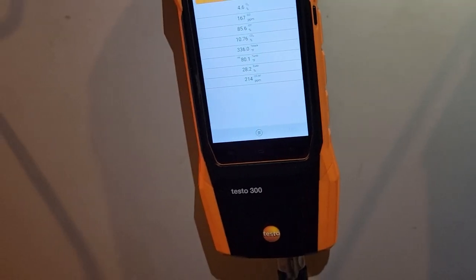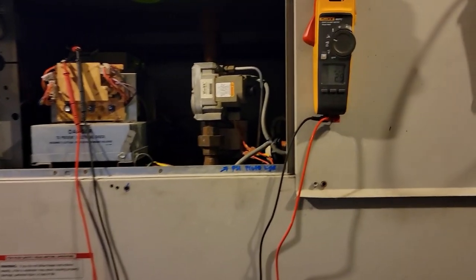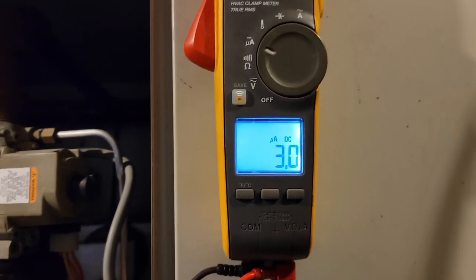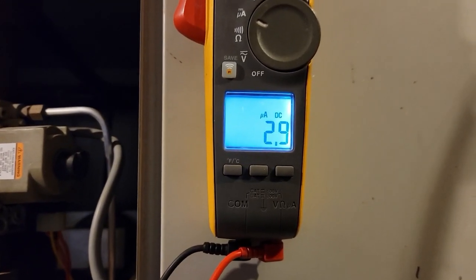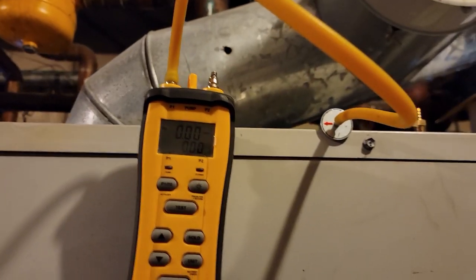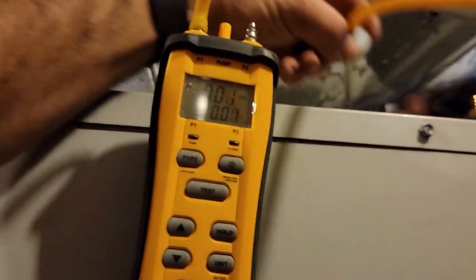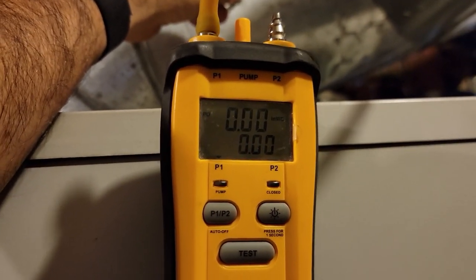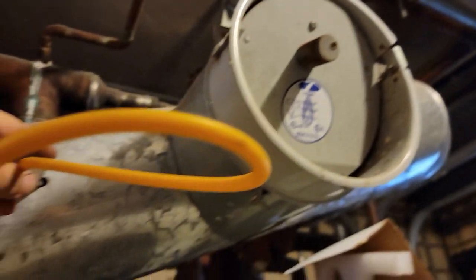We're back again because of flame failure. It drops out at two microamps. Started out at 2.3, 2.4. Check my draft. We're right in there. This ain't the right probe, but better than nothing. We are not overly drafting, and we are teeter-tottering. Supposed to be like 0.001 negative.